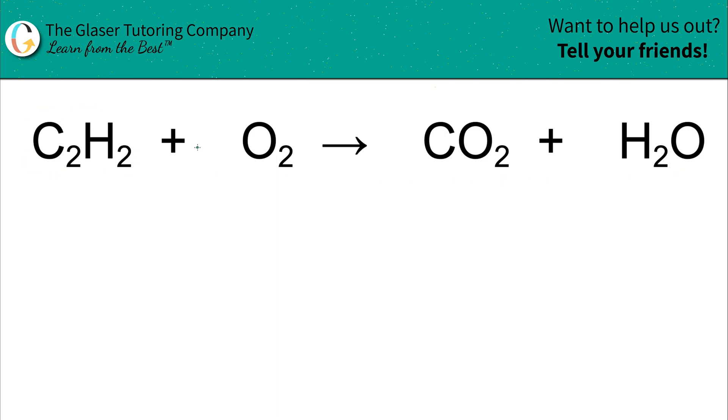Just in case you're curious, this is ethine. When you get to organic chemistry, it'll make sense. But in any case, in words, this would be ethine plus oxygen gas yields carbon dioxide plus water. So the first thing is, just keep in mind the general premise, is that however many atoms of each element I have on the left better equal however many atoms of each element I have on the right.